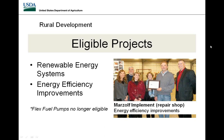Switching energy sources is not eligible as a standalone project, but it can be incorporated into an energy efficiency improvement. For example, a farmer who wants a new grain dryer and hooks up to a natural gas line can include the cost to install the natural gas line as part of the project. This can drive up project costs, which can affect the points the project receives. The recent Farm Bill also made flex fuel or blender pumps ineligible for the program.